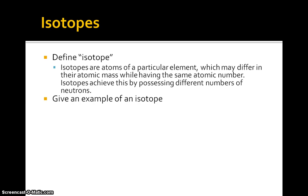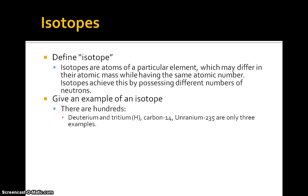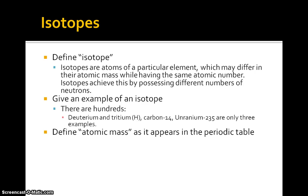You might want to give an example of a common isotope — there are hundreds. Ones that easily come to mind are deuterium, that's hydrogen of mass 2; tritium, that's hydrogen of mass 3 with 1 proton and 2 neutrons; carbon-14, that's carbon with 2 extra neutrons; and uranium-235. Those are four examples.